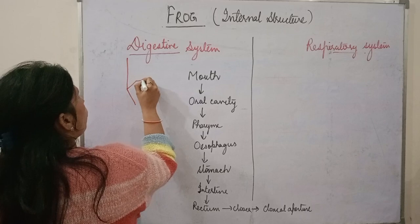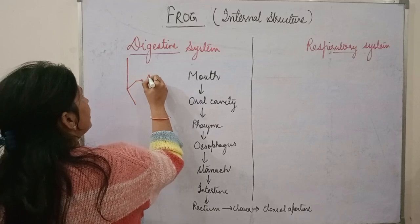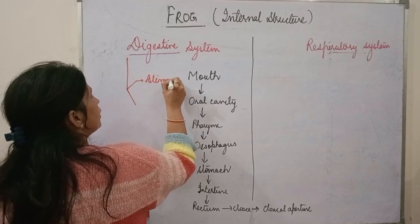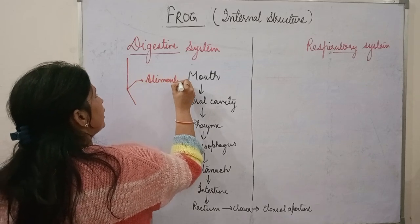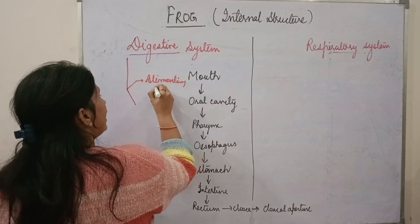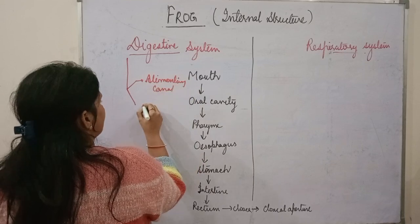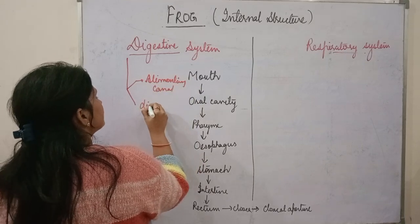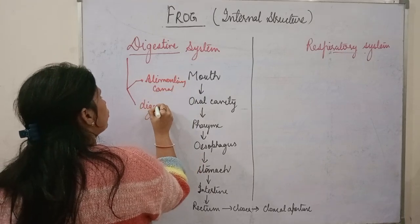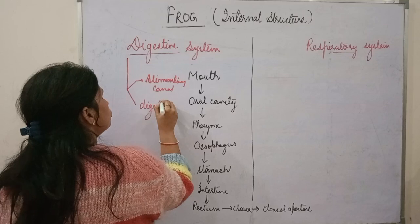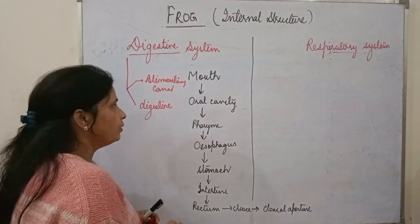Which two parts? One is the alimentary canal, like ours, and the other is the digestive glands. In the digestive glands, there are glands that can secrete the digestive juices or enzymes.